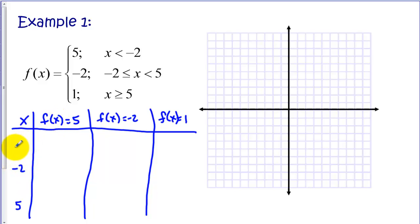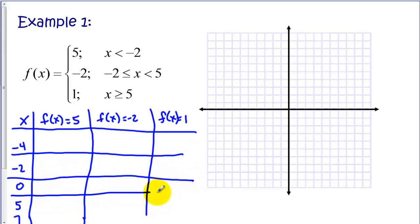So let's pick, say, -4 to be left of this part here. Let's pick something in this interval here, let's pick maybe x = 0, and then let's pick something bigger than 5, so let's pick 7. Now when we go to fill out our table of values, we need to pay attention to where our domain is applicable.